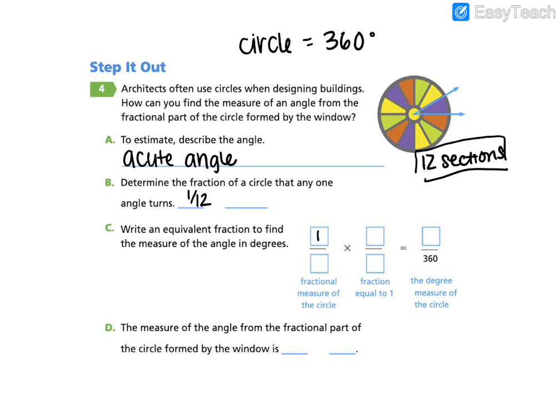Okay, so we know the fractional measure of the circle is 1/12th. We are going to create an equivalent fraction to find the measure of the angle in degrees. We need to think about 12 times what will equal 360? First, we can think of what 12 times what will equal 36 tens. 12 times 3 will equal 36. So it must be 12 times 3 tens, or 30. Now remember, this has to be a fraction equal to 1, so our numerator must match our denominator.